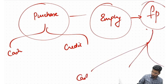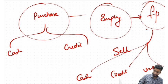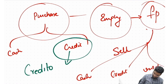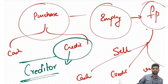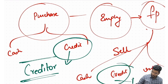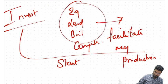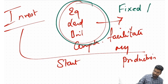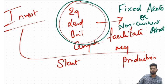I then employ resources to convert goods into finished products. When I have finished products, I try selling them — either on cash, on credit, or some remain unsold. When I purchase goods on credit, we call the supplier a creditor. When I sell goods on credit, we call the buyer a debtor. The investments made to facilitate production are known as fixed assets or non-current assets.